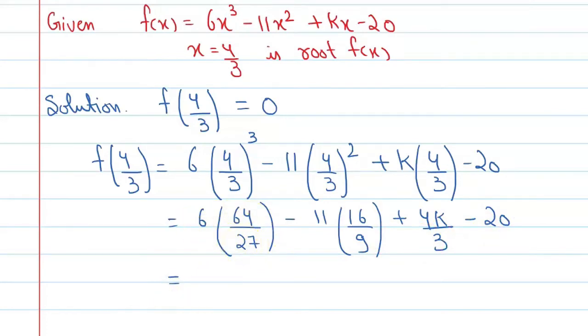Now if you solve this, you will get the value. This will become 128 upon 9. On solving further, you will get 11 into 16 that is 176 upon 9, plus 4k upon 3 minus 20.